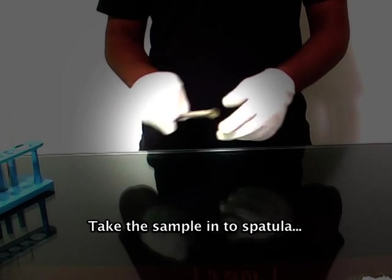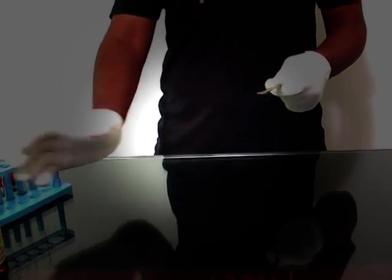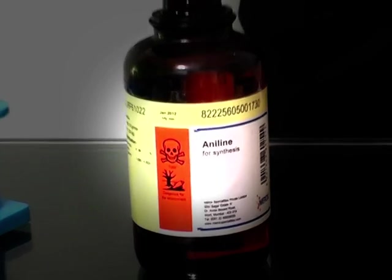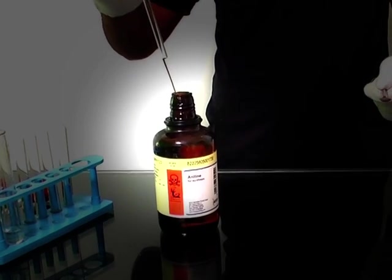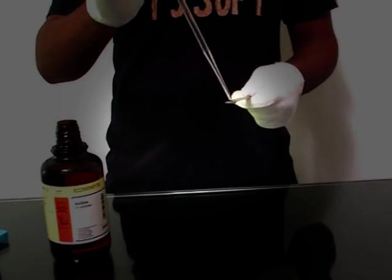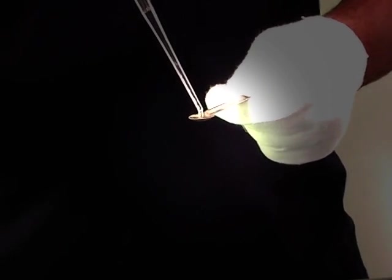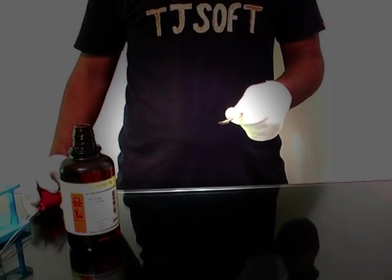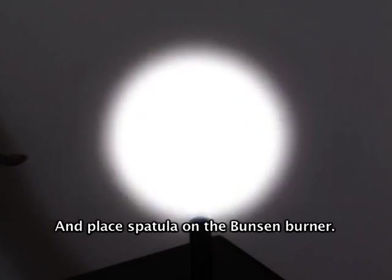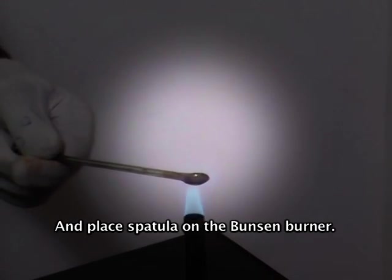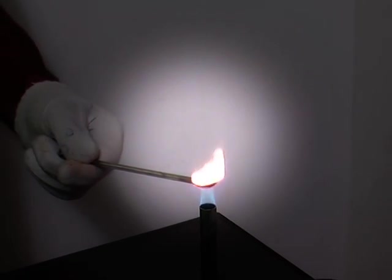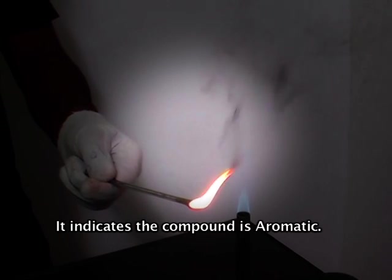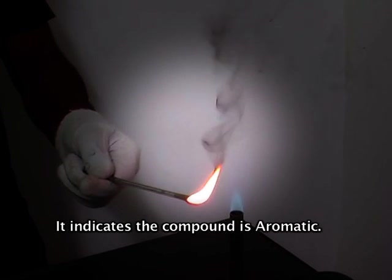Take the sample on a spatula and place the spatula on the Bunsen burner. The compound burns with a smoky flame, which indicates the compound is aromatic.